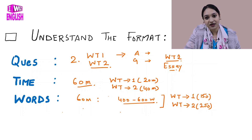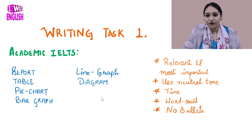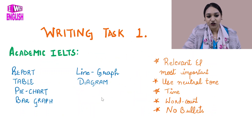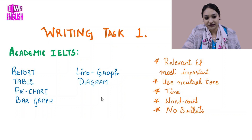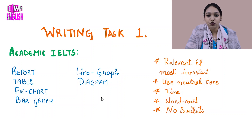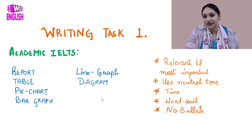Now let's talk about Writing Task 1. In academic IELTS, you can be given any visual representation. You have to figure it out and explain it in your own words following the question.